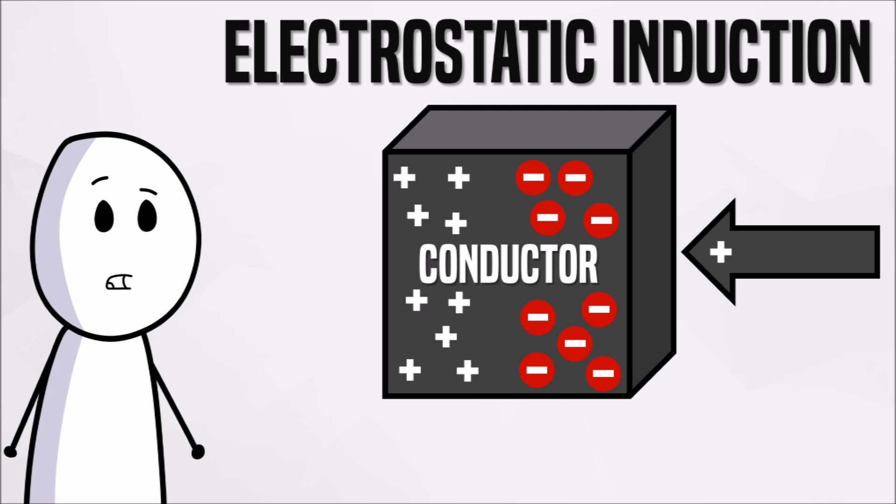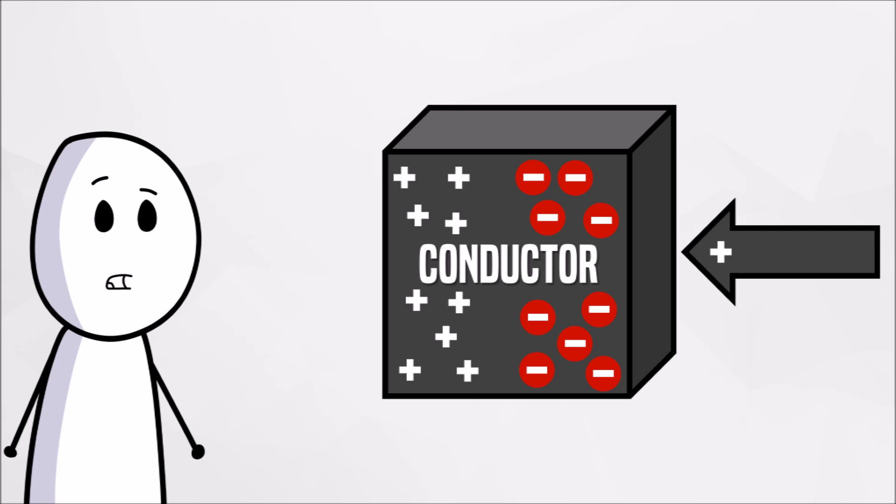With the foreign object present, the positive and negative particles end up on opposite sides of the conductor. This essentially cancels out the field of the external object's charge inside the metal conductor. Therefore, the net electric charge inside the conductive material is zero.